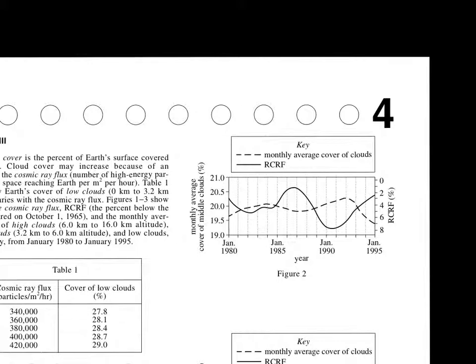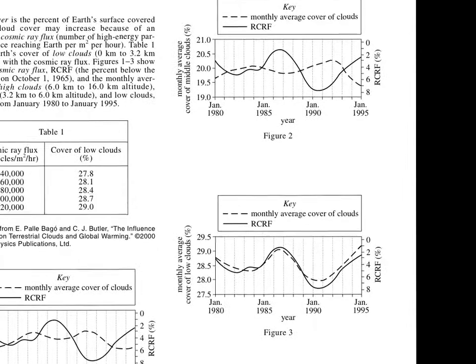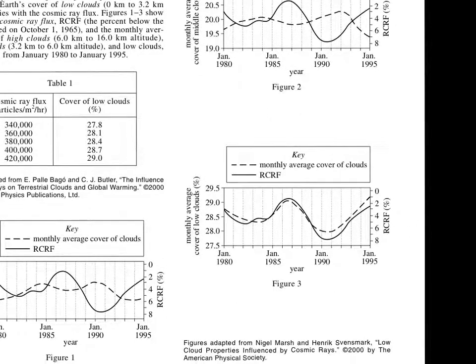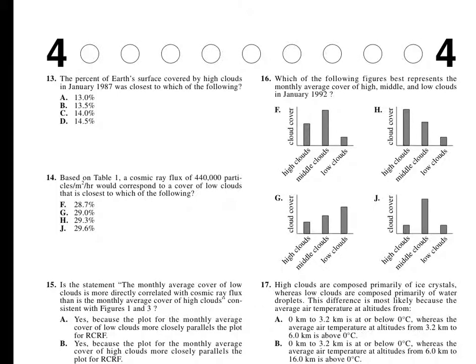Middle clouds, 1992, is between 20 and 20.5. And low clouds, 1992, is between 28 and 28.5. So the answer is, so we want the high clouds to have the lowest cover and the low clouds to have the highest. So the answer is G. And that is correct.